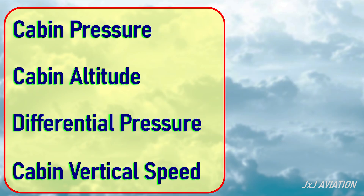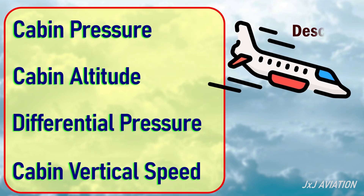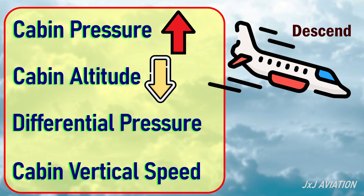Now let's consider the aircraft descending from its cruise altitude. Here, the cabin pressure has to increase. An increase in cabin pressure means the cabin altitude decreases. The cabin vertical speed will be in the negative range. The differential pressure will gradually decrease.